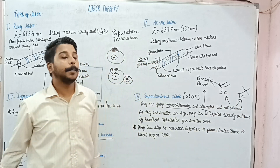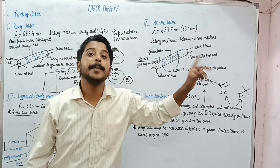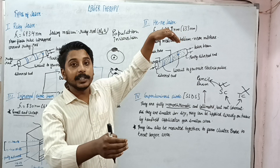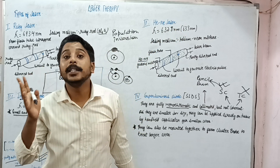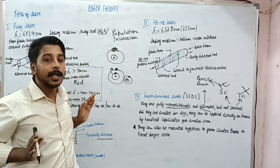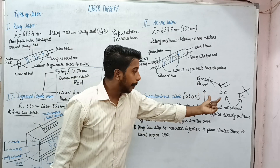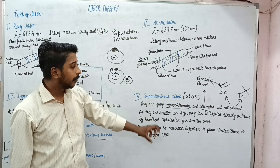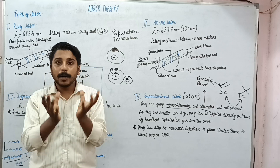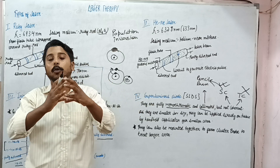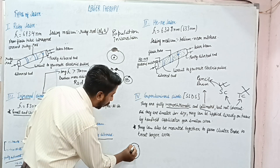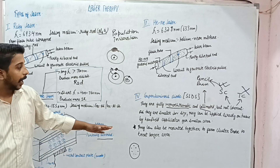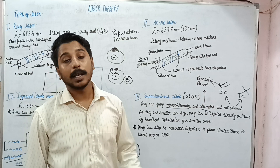Temporal coherence is not present in the super luminous diode, meaning the electric and magnetic fields are not in phase — they are out of phase. A handheld applicator can be used for smaller areas. A number of super luminous diodes can be mounted together to form a cluster probe, which can be used for larger area treatment. That is all about super luminous diodes.